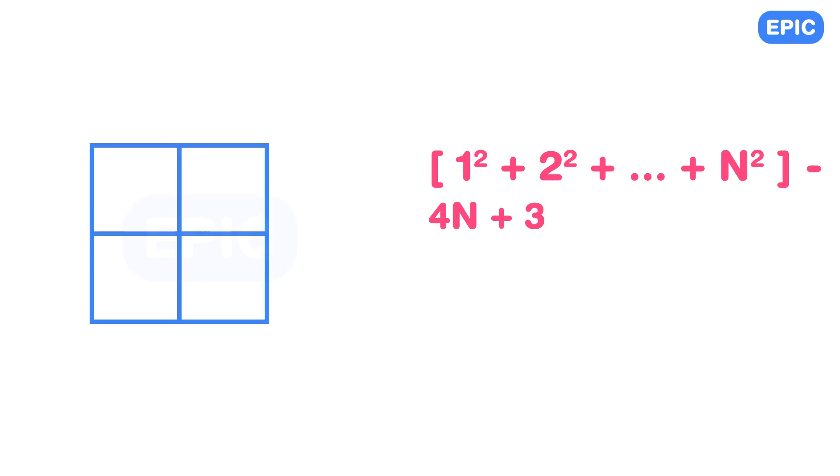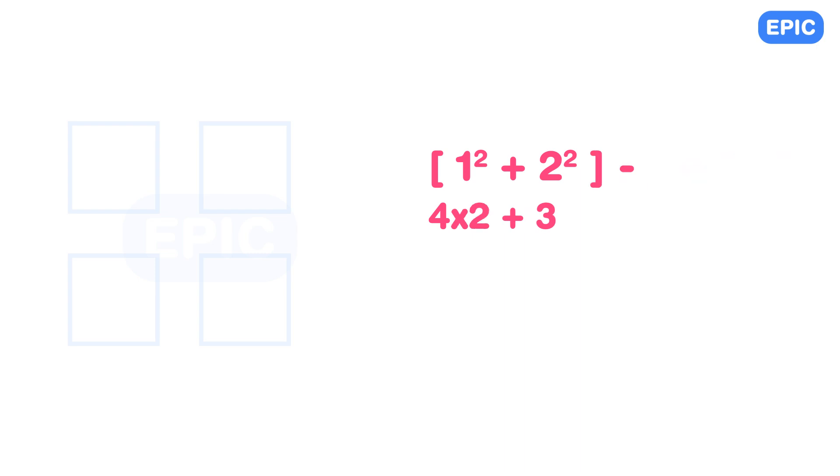Let us check it for a 2 x 2 square. By removing 4 corner squares, we have a total of 0 squares left. Using the formula, we get 1 plus 4 minus 2 into 4 plus 3. This indeed is 0.